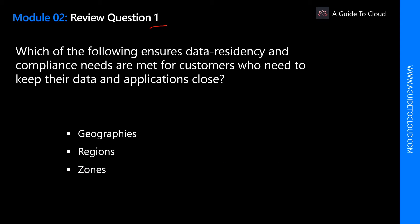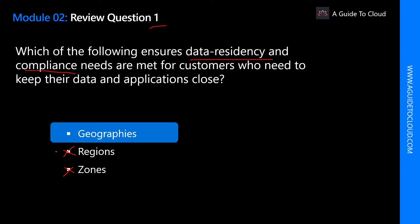Which of the following ensures data residency and compliance needs are met for customers who need to keep their data and applications close? The key word here is data residency and compliance. The options are geographies, regions, and zones. The right answer is geographies, because geographies allow customers with specific data residency and compliance needs to keep their data and applications close. Geographies ensure that data residency, sovereignty, compliance, and resilience requirements are honored within the geographical boundaries.